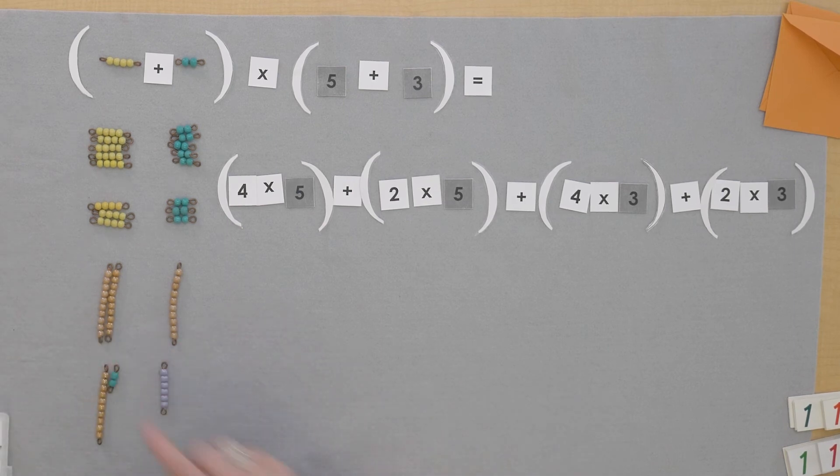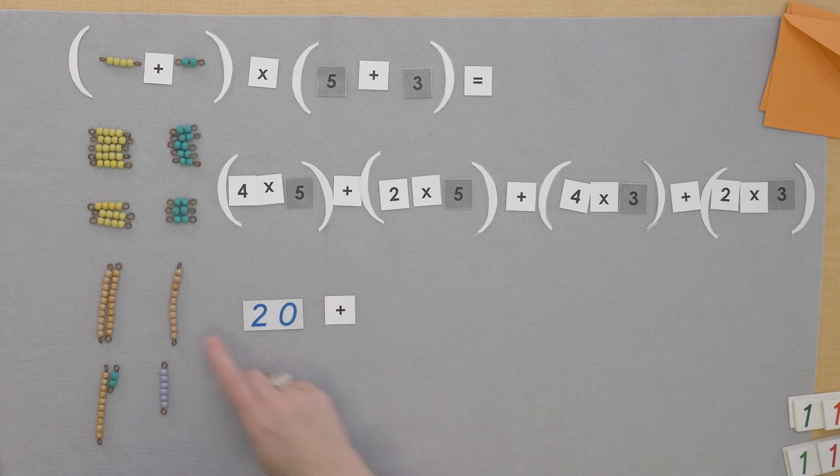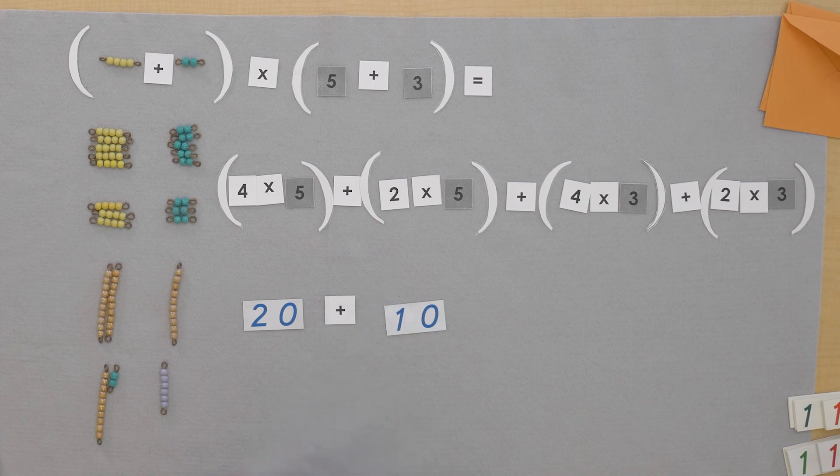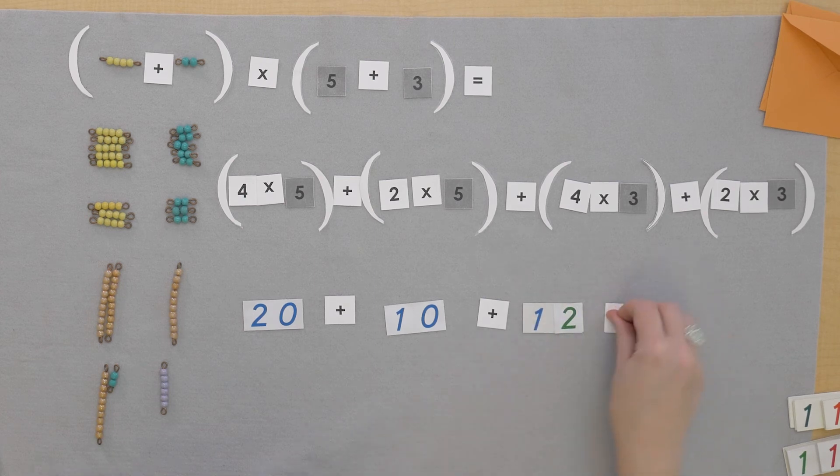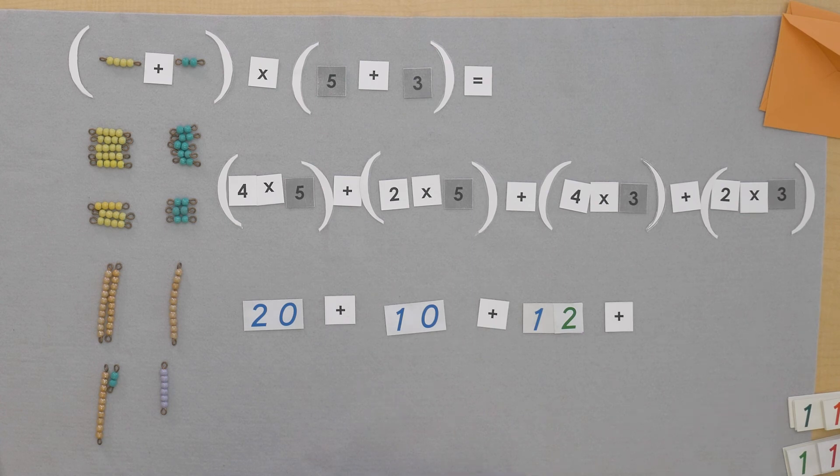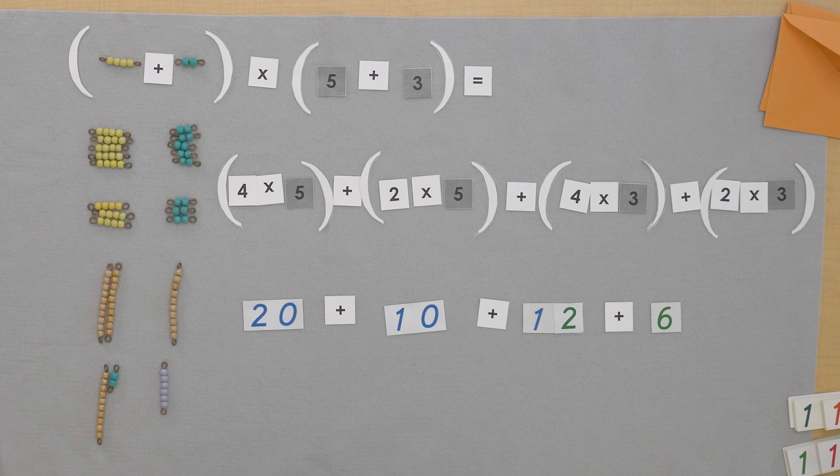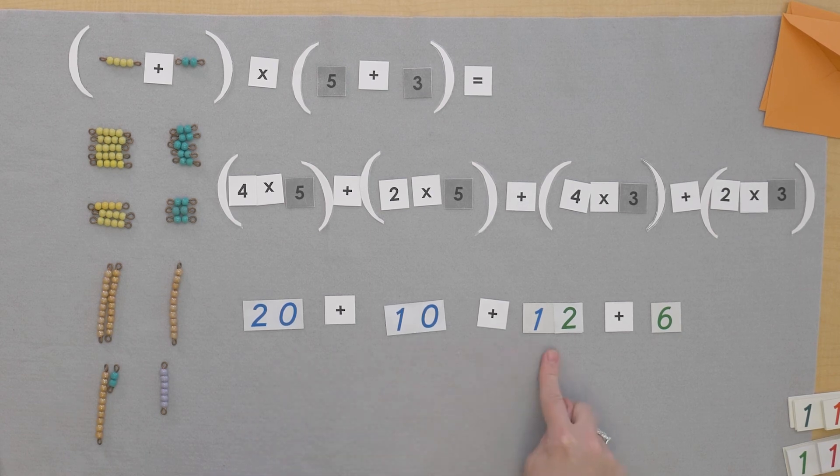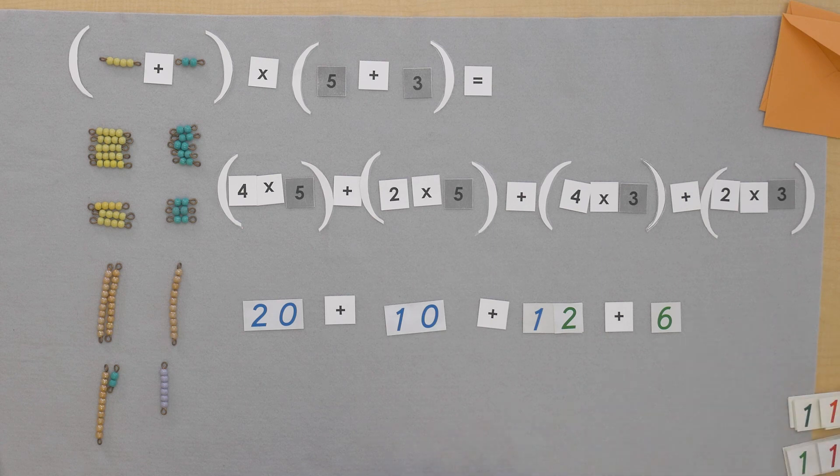Now let's see what that equaled all together. That was 20 plus 10 plus 12 plus six.